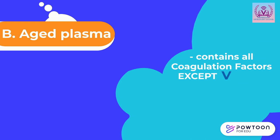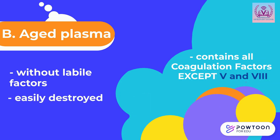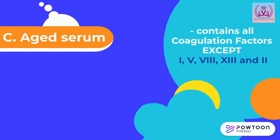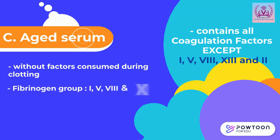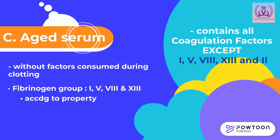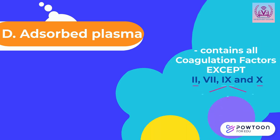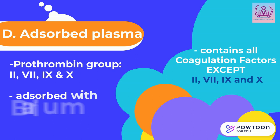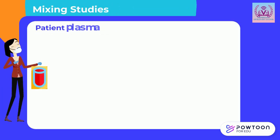Aged plasma contains all coagulation factors except factors 5 and 8, which are labile factors easily destroyed as plasma ages. Aged serum contains all coagulation factors except factors 1, 5, 8, 13, and 2 — these are absent in serum because they were consumed during the clotting process. Factors 1, 5, 8, and 13 are categorized under the fibrinogen group. Adsorbed plasma contains all coagulation factors except factors 2, 7, 9, and 10, which belong to the prothrombin group and can be absorbed using barium sulfate or aluminum hydroxide.